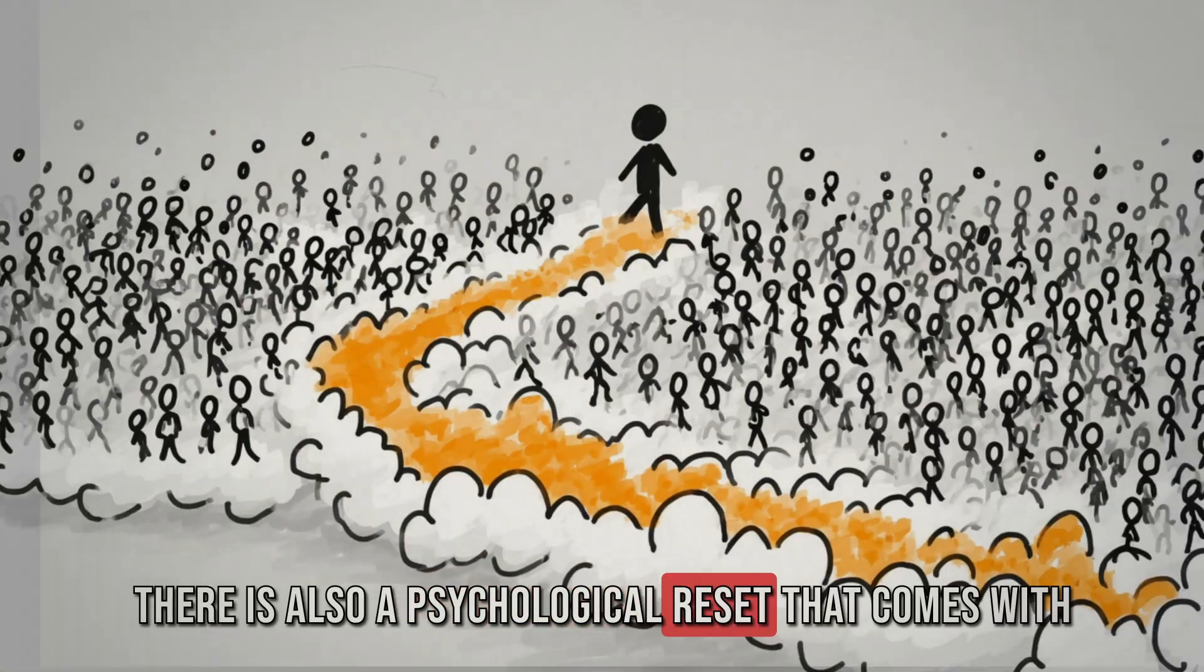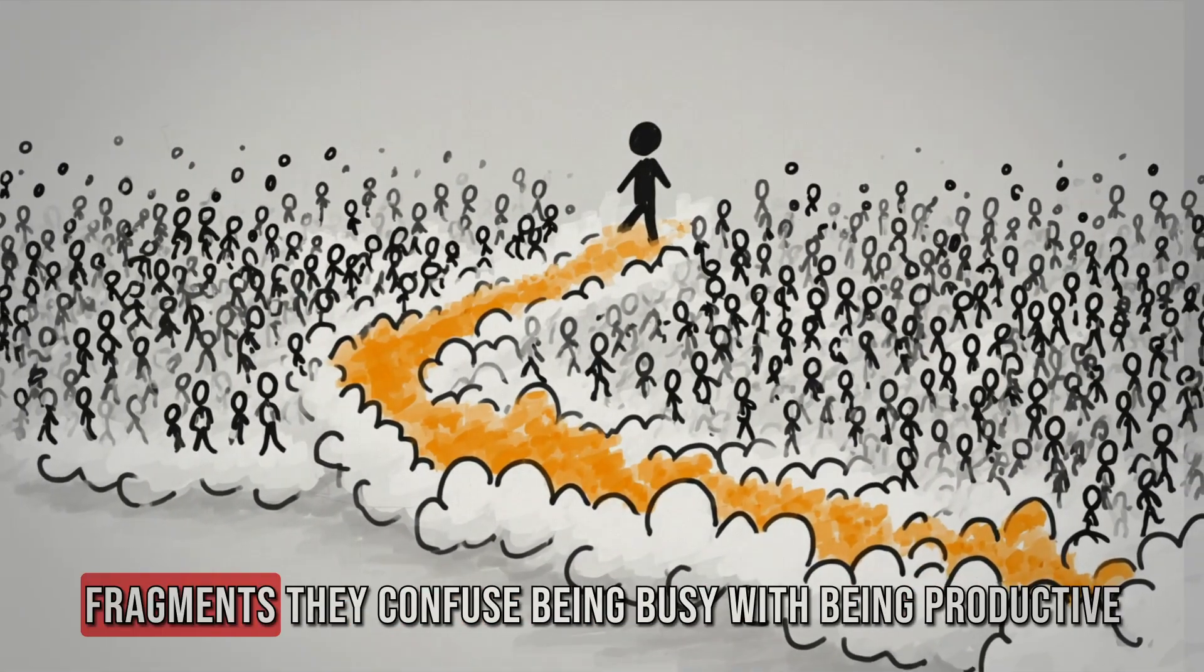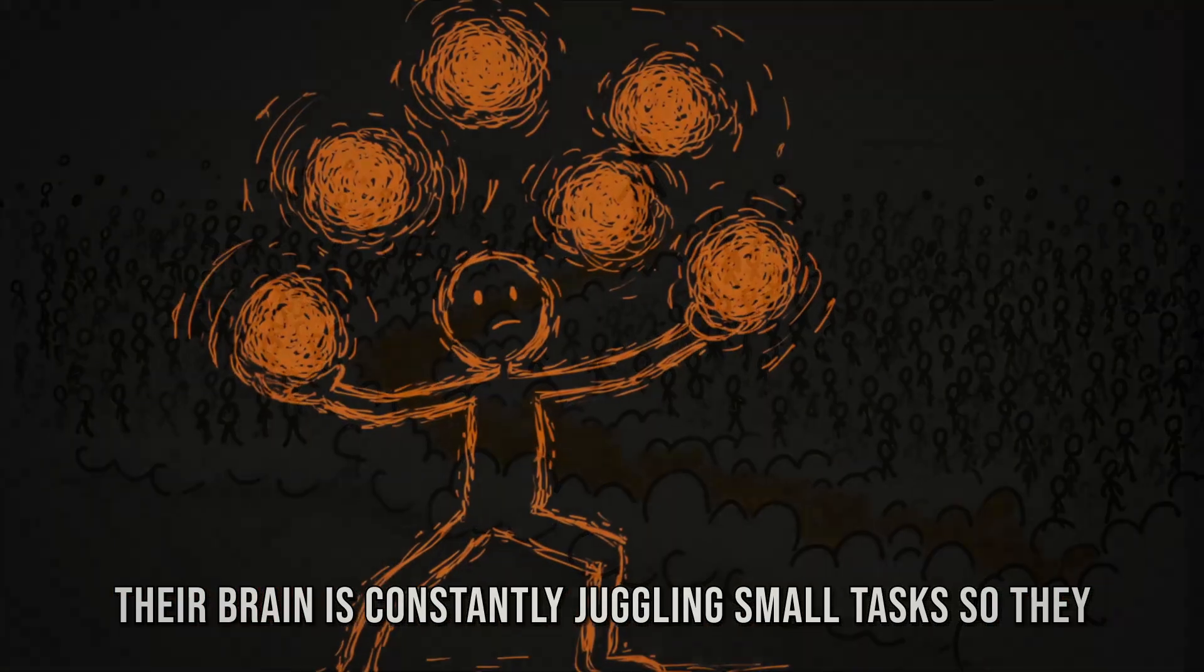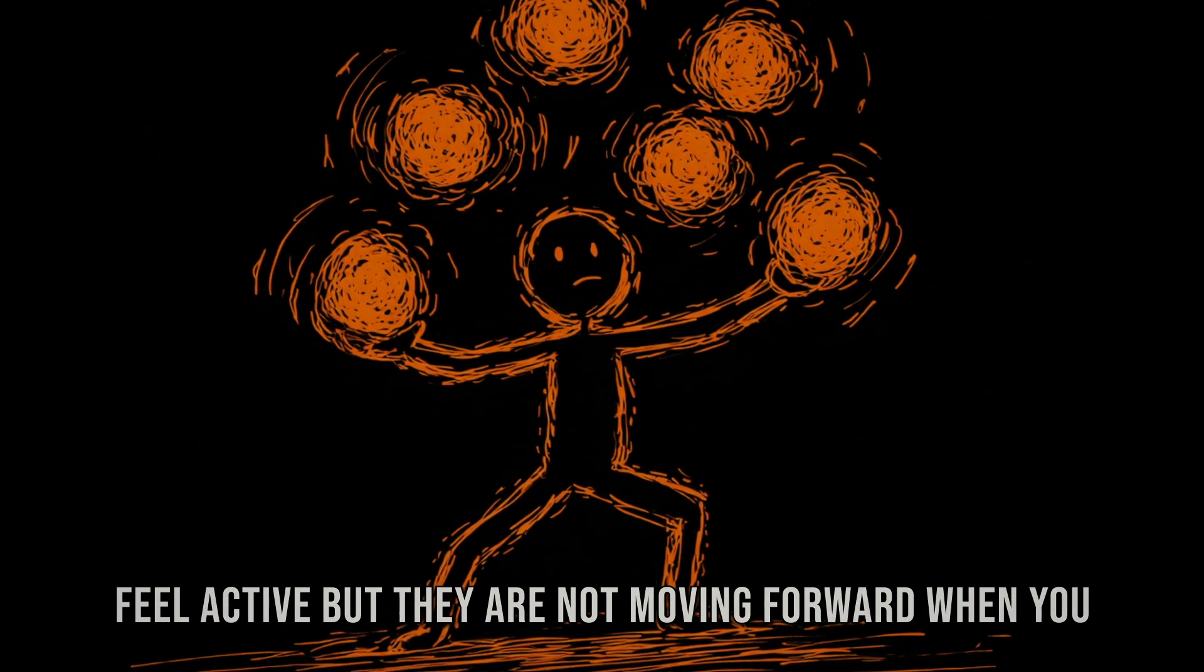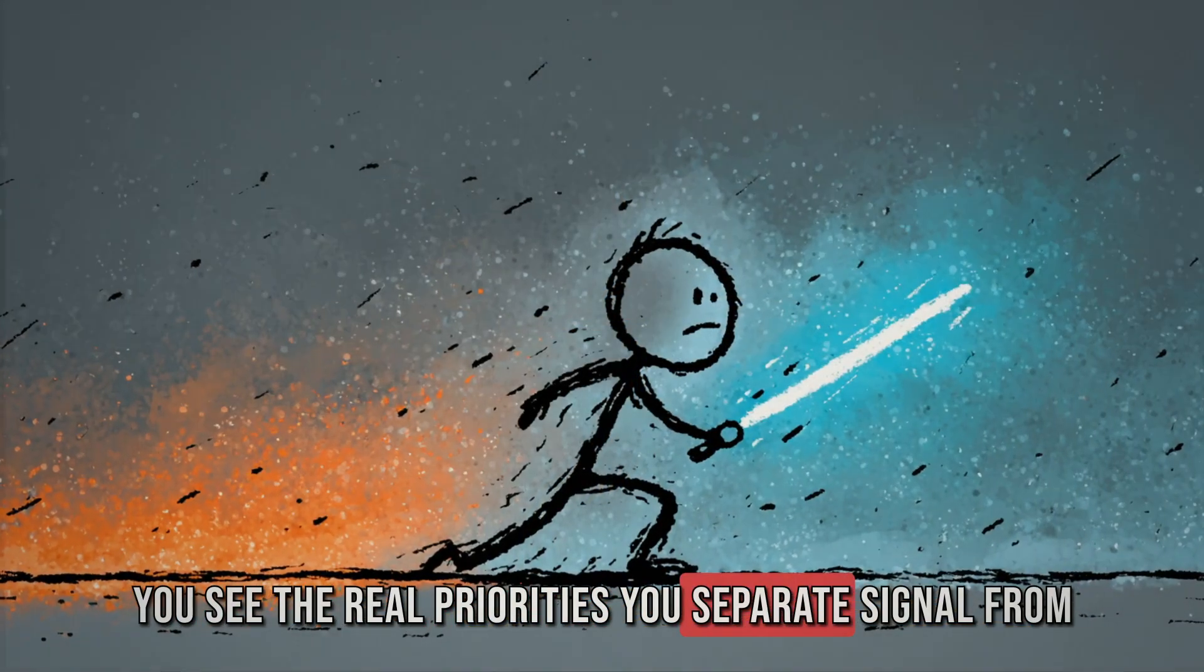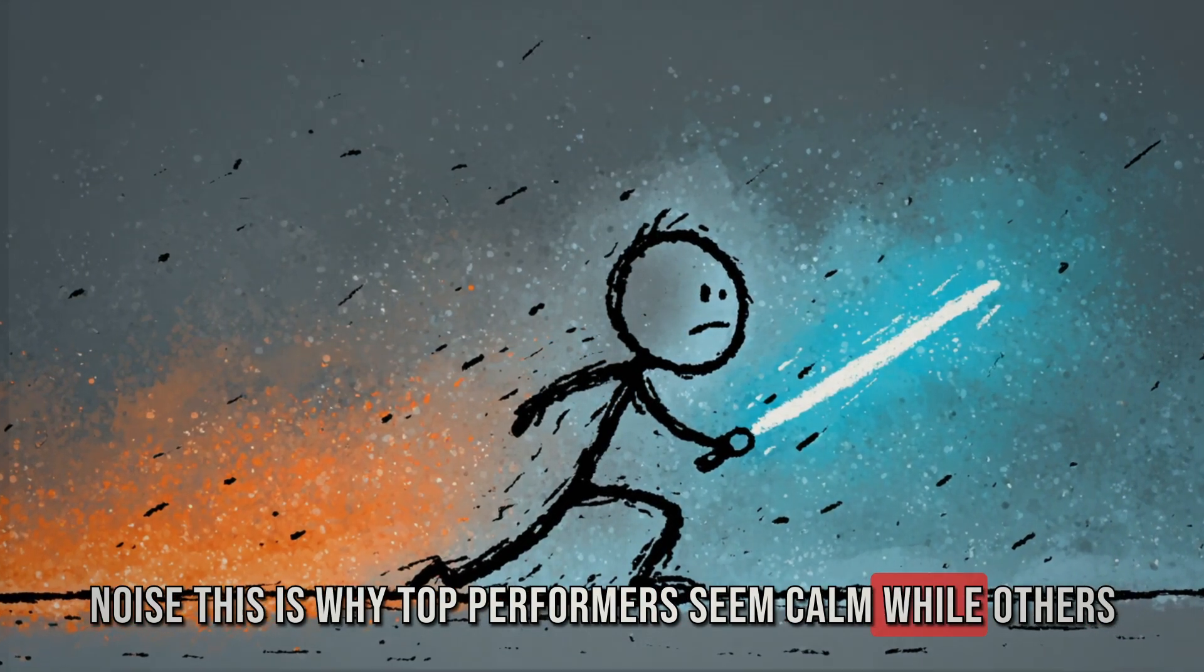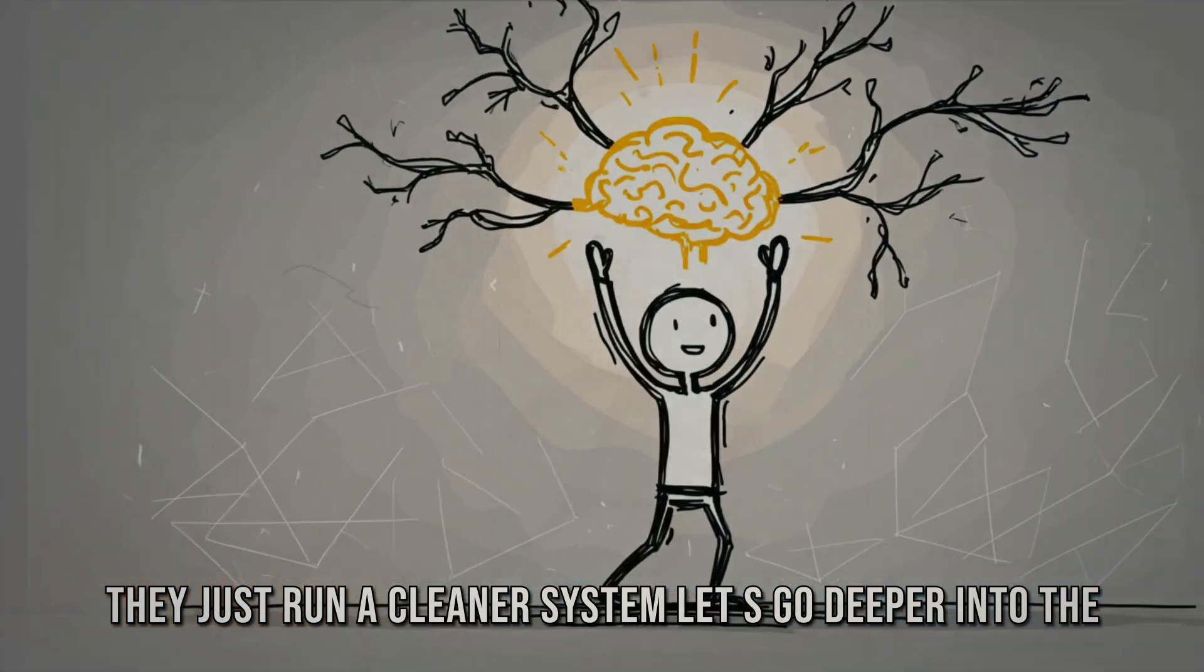There is also a psychological reset that comes with this. Most people live in what I call the fog of fragments. They confuse being busy with being productive. Their brain is constantly juggling small tasks, so they feel active, but they are not moving forward. When you defragment, you cut through the fog. You see the real priorities. You separate signal from noise. This is why top performers seem calm while others are overwhelmed. They are not superhuman. They just run a cleaner system.